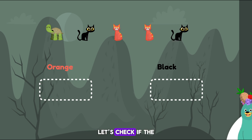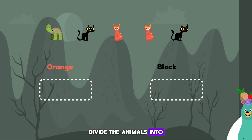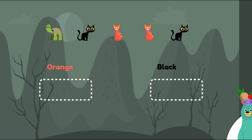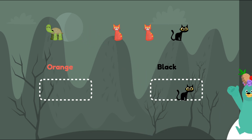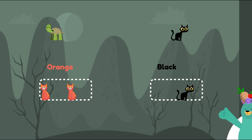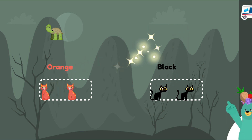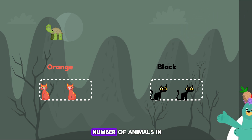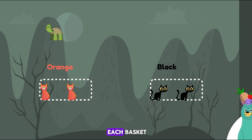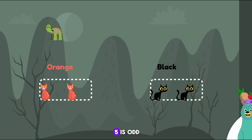Let's check if the number 5 is even or odd. Divide the animals into black animals and orange animals. You put the same number of animals in each basket, but there is one left over. That means the number 5 is odd.